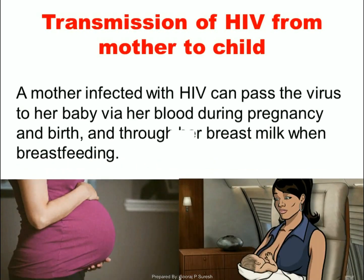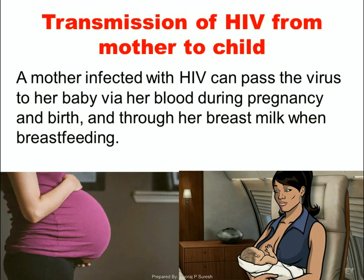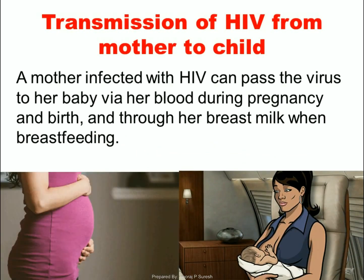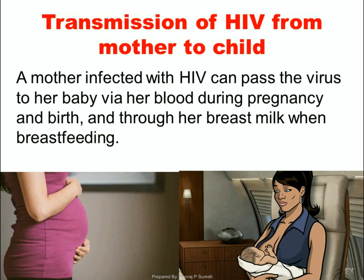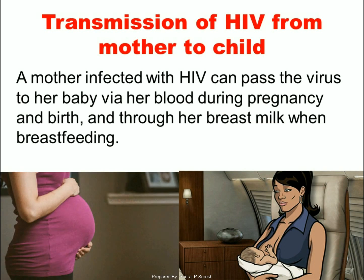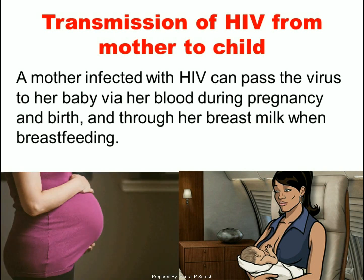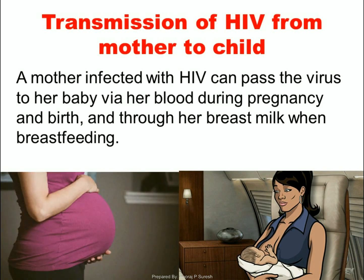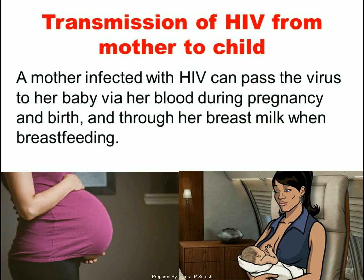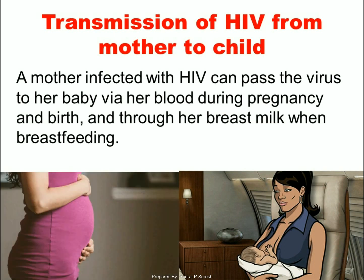Transmission of HIV from mother to child: A mother infected with HIV can pass the virus to her baby via her blood during pregnancy and birth, and through her breast milk when breastfeeding.